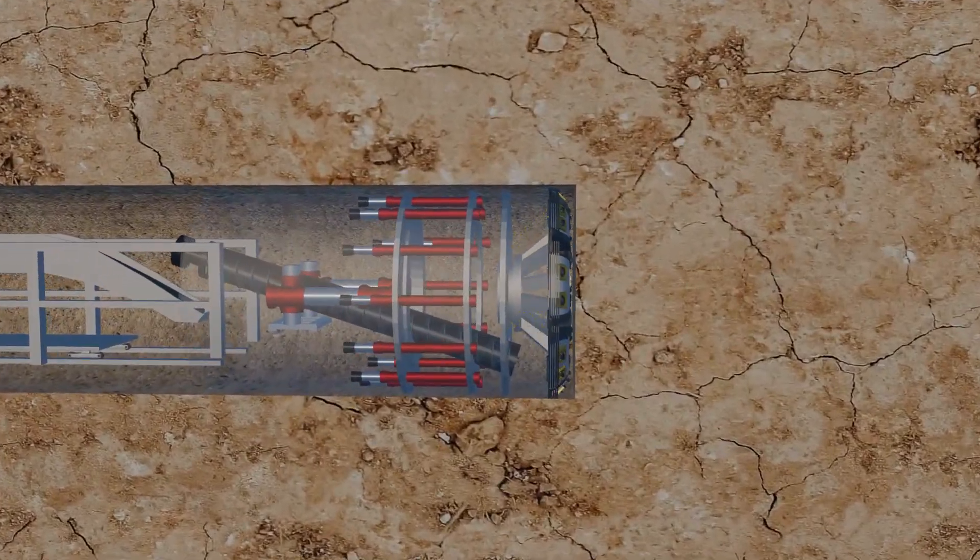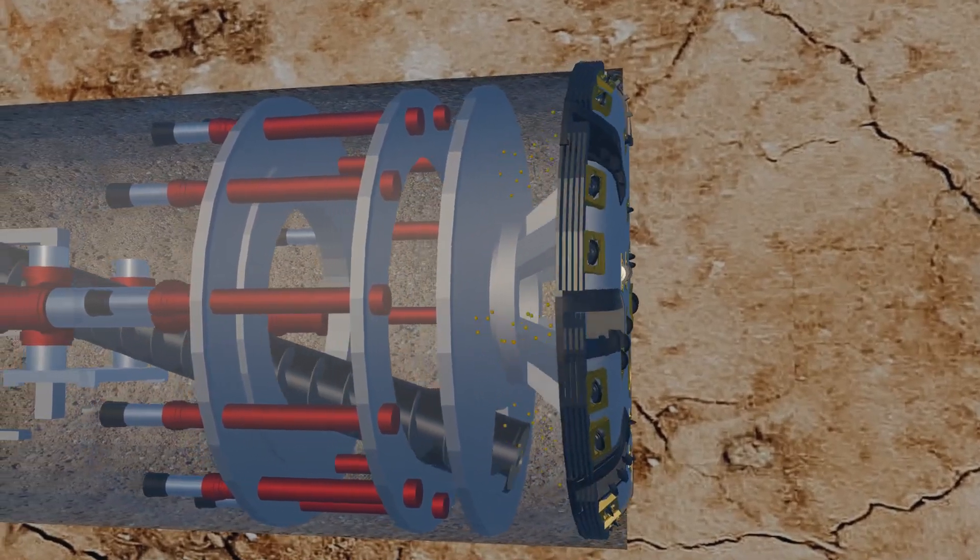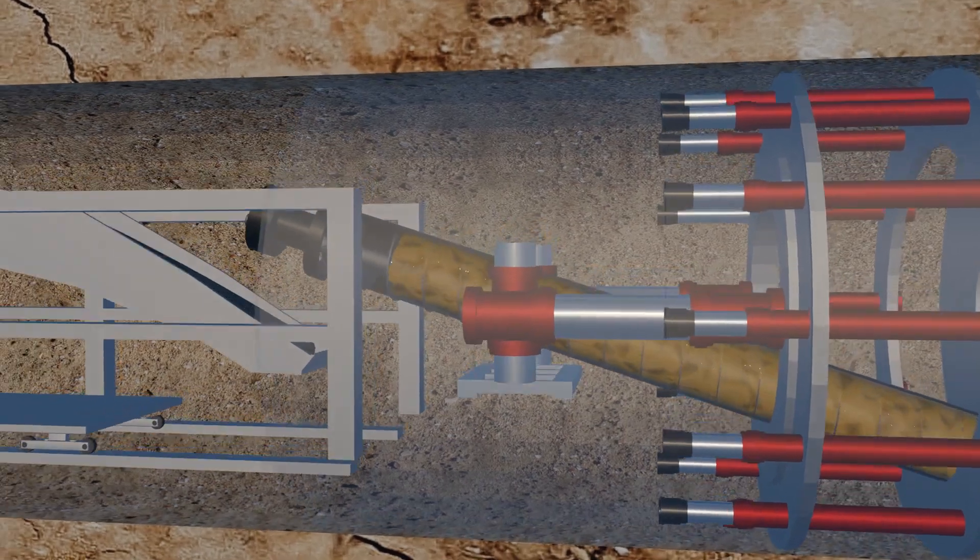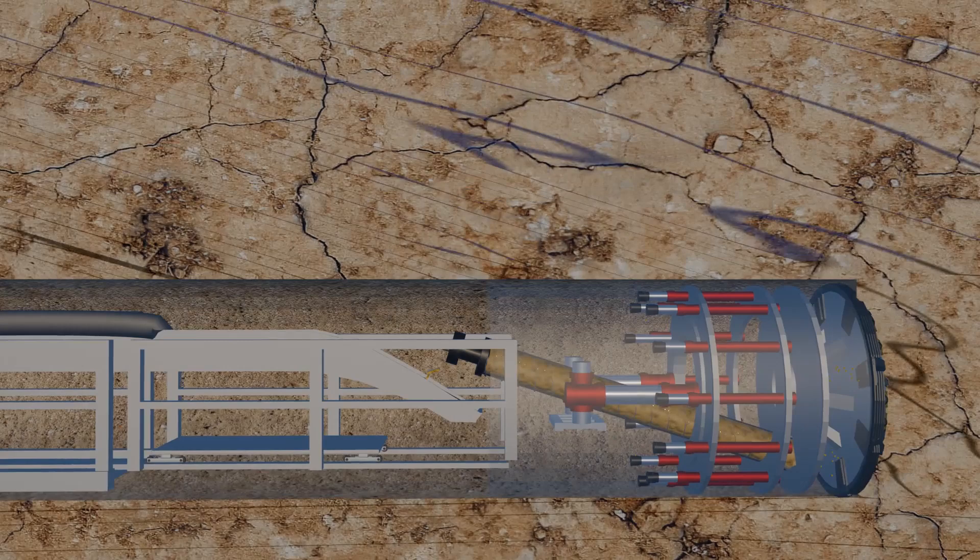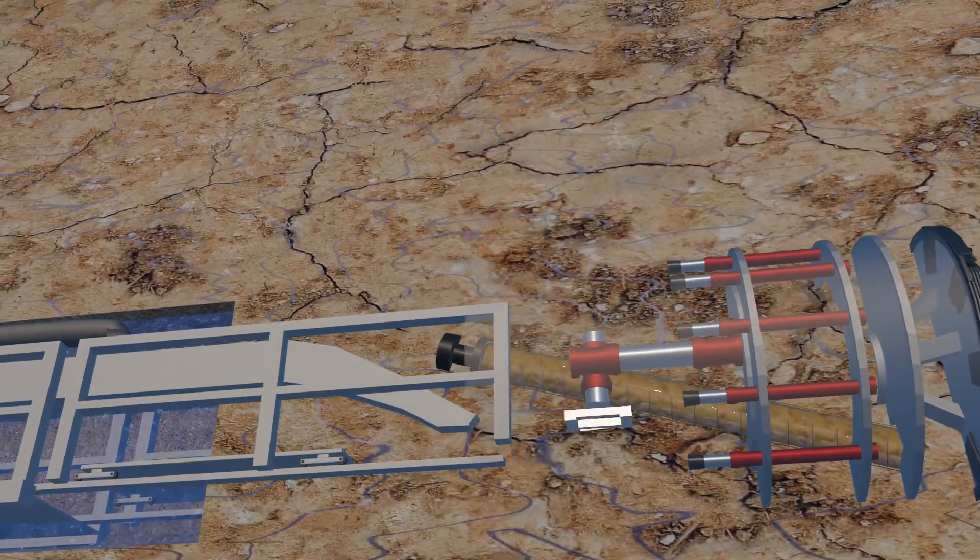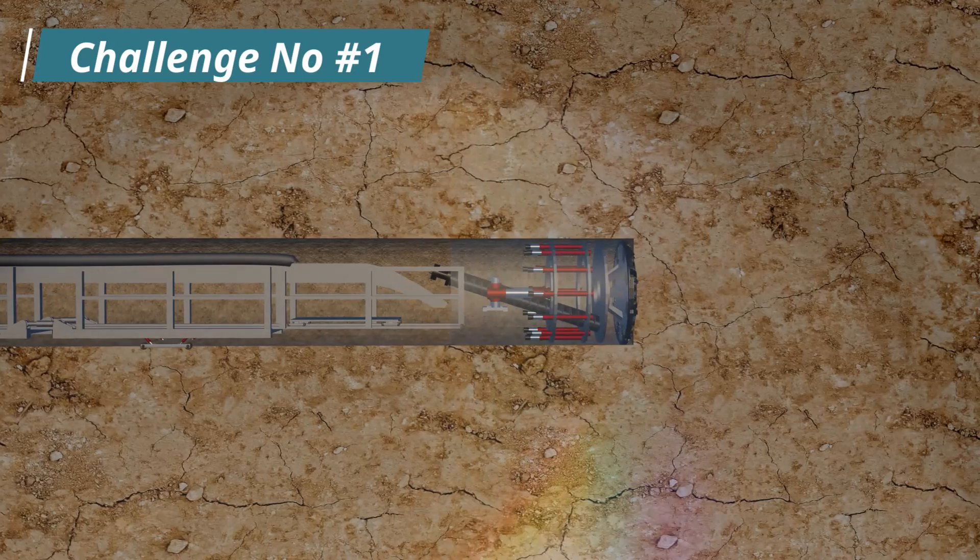However, as soon as the TBM reached below the seabed, significant challenges began to emerge. The cutter head of the TBM excavates the chalk marl, and with the help of a screw conveyor, the waste material is transported to a conveyor belt, which then carries it out of the tunnel. Despite the machine operating smoothly, the tunnel unexpectedly collapsed. This sudden collapse posed one of the biggest challenges for the engineers.